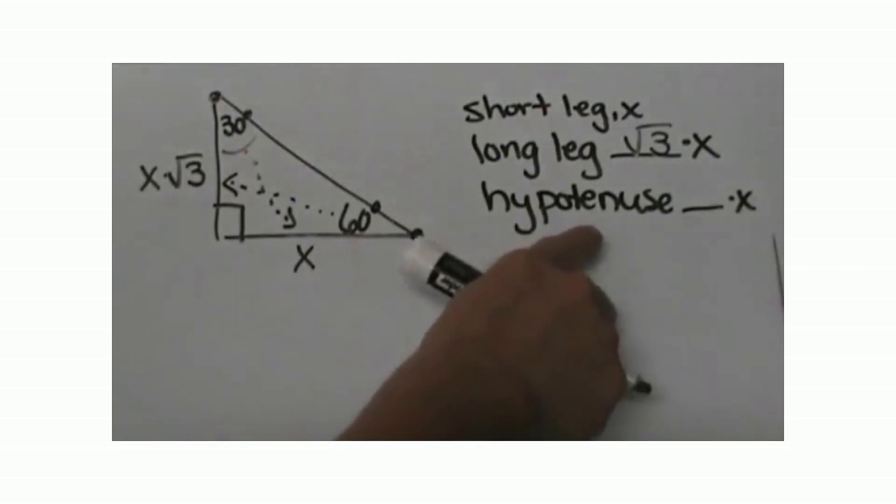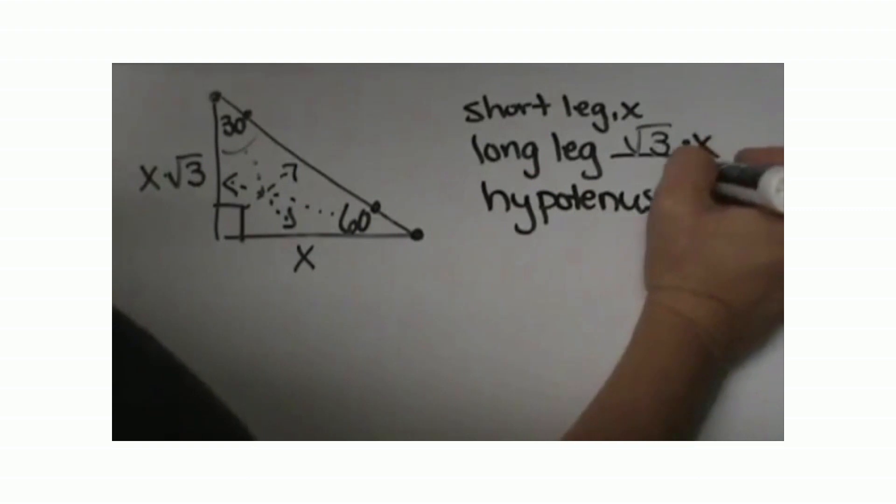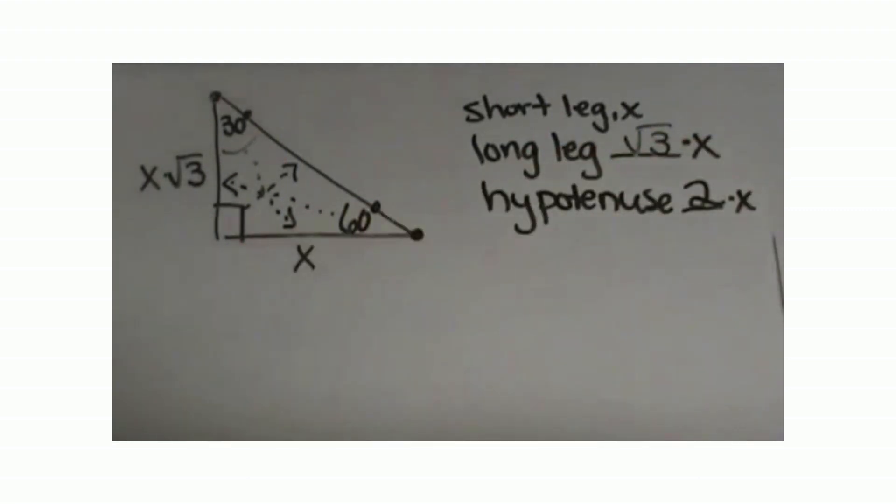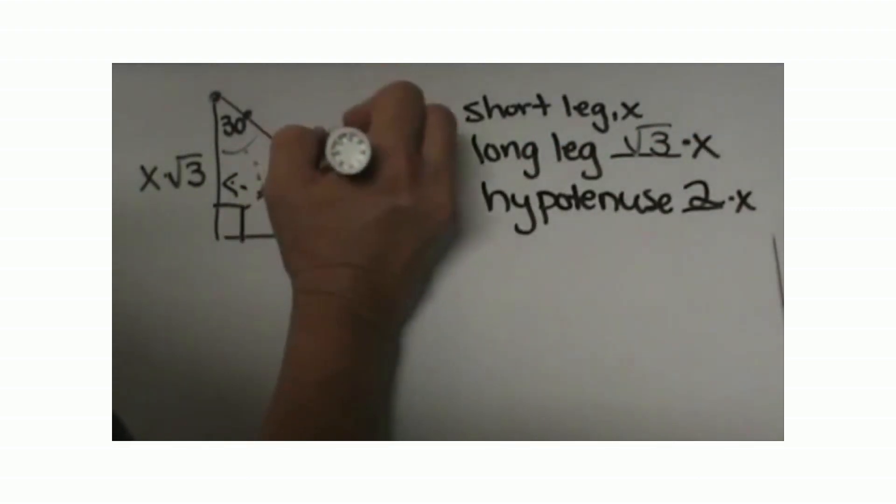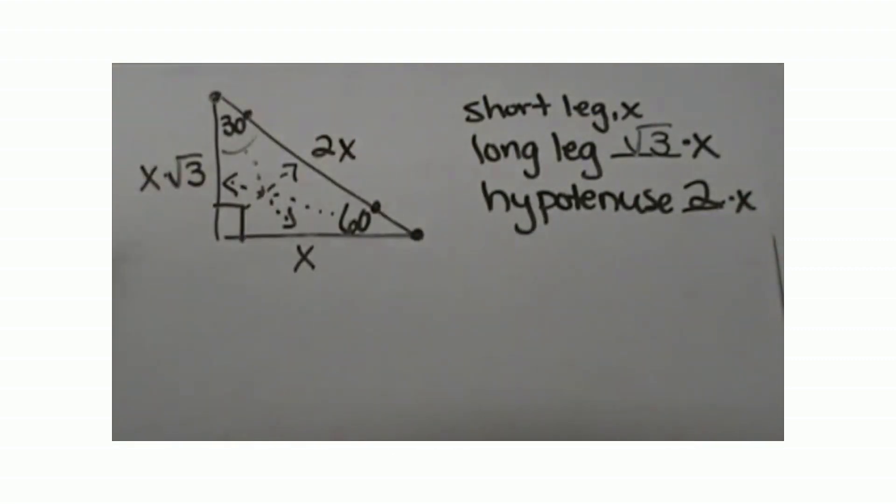Then the hypotenuse is the right angle. The rule is 2 times x or 2x. That is our general rule and it works for every 30-60-90 right triangle.